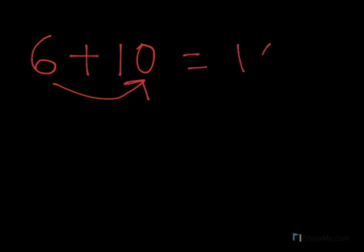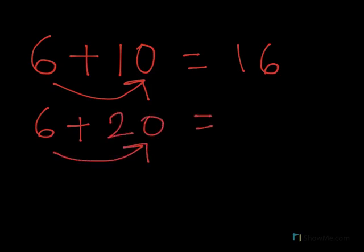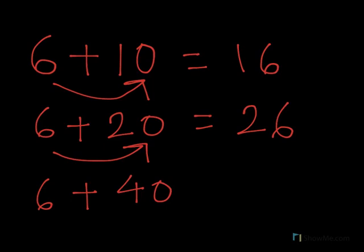Like 6 and add it with 10. So what will happen? 6 will go simply to zero position and 10 will become 16. Same will happen when we do 6 plus 20. 6 will go to zero position and 20 will become 26. 6 plus 40, what will happen? 6 goes to zero position and 40 becomes 46.